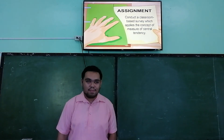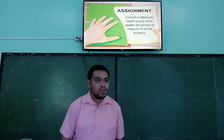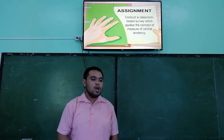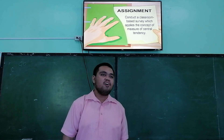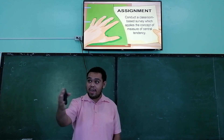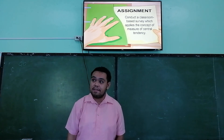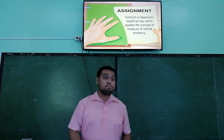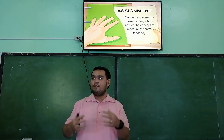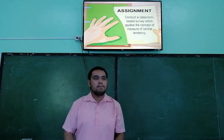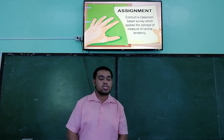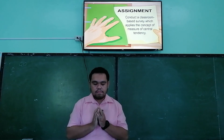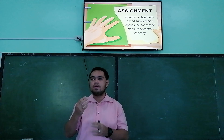Since you have understood everything, I will be giving you an assignment to be done by pairs. You need to conduct a classroom-based survey which applies the concepts of the measures of central tendency. Write it on short bond paper and submit it next Monday. Please all stand for our closing prayer. In the name of the Father, and the Son, and the Holy Spirit. Amen.